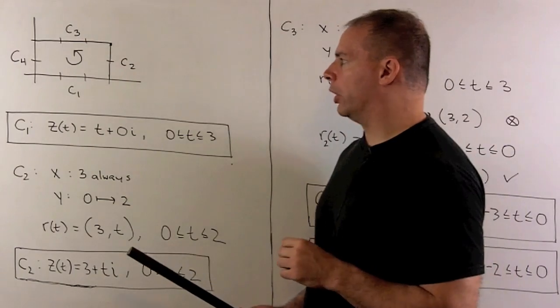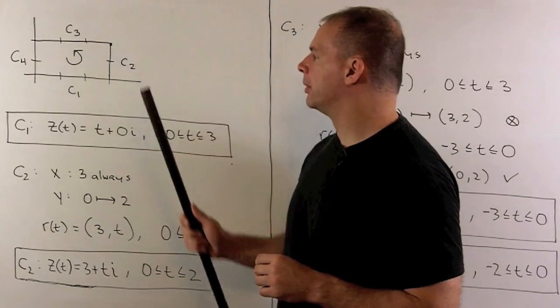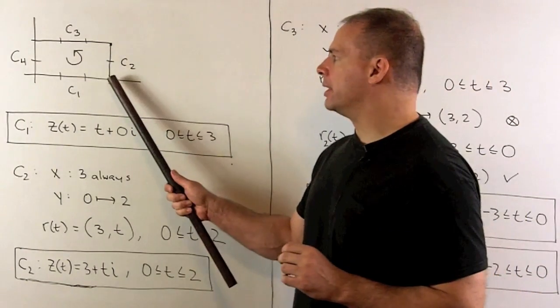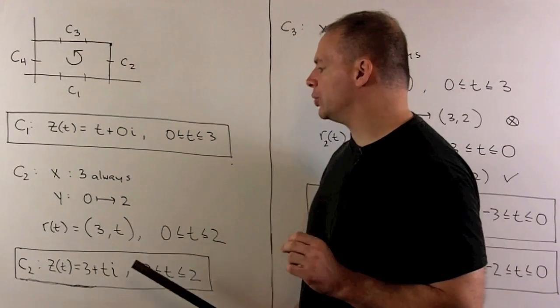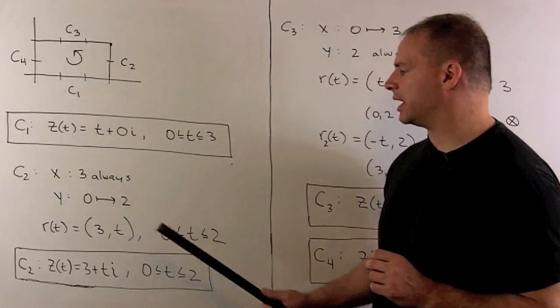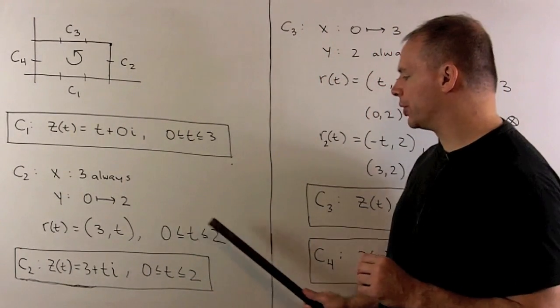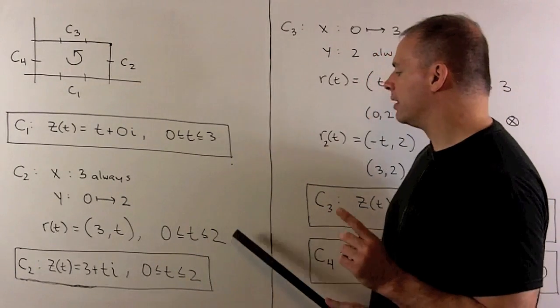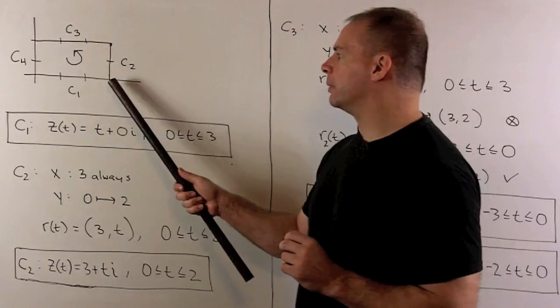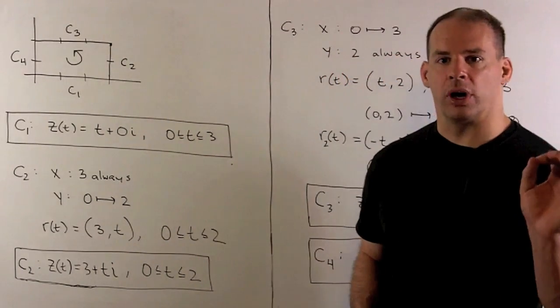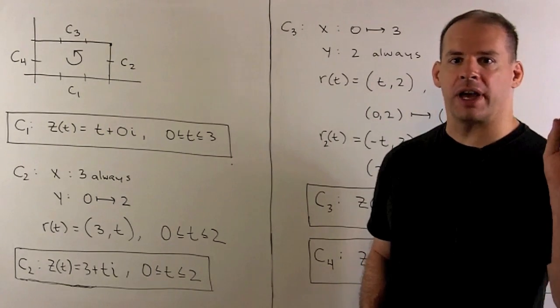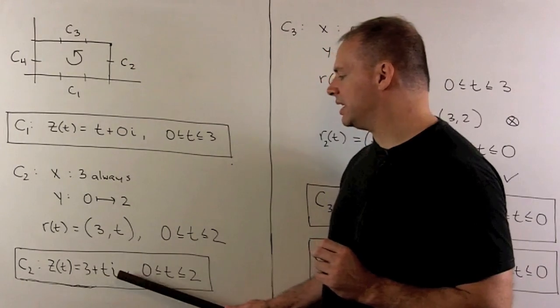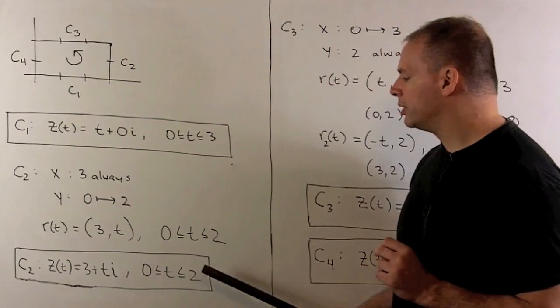For c2, we know we're going from here to here. So the x value is always going to be 3. The y value is going to go from 0 to 2. So I can parametrize using r of t equals 3, t as t goes from 0 to 2. Now, note, if I put 0 in, we're going to have 3, 0. If I put 2 in, we have 3, 2. So we're going from here to here. So we have the correct orientation. So convert to the complex plane. That gives us z of t equals 3 plus t times i going from 0 to 2 in t.